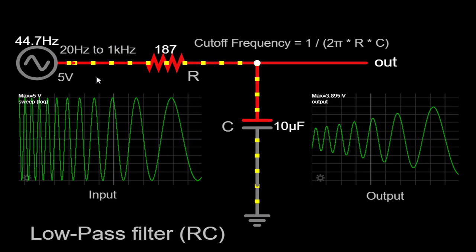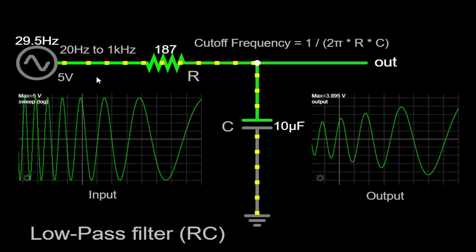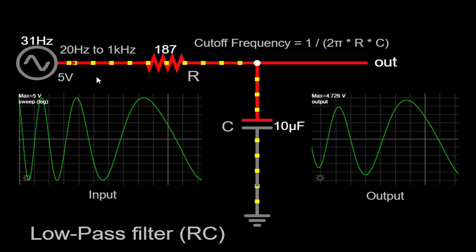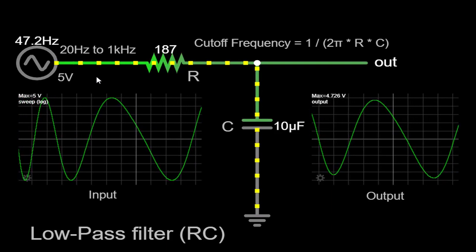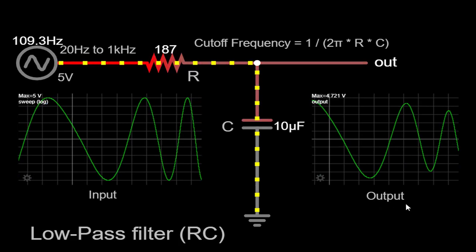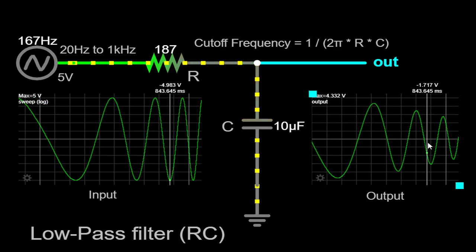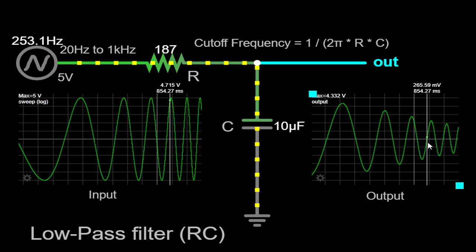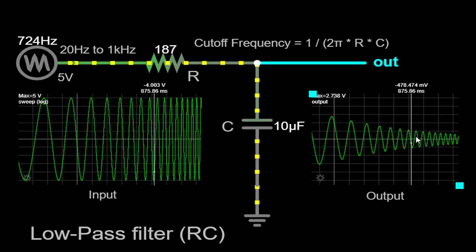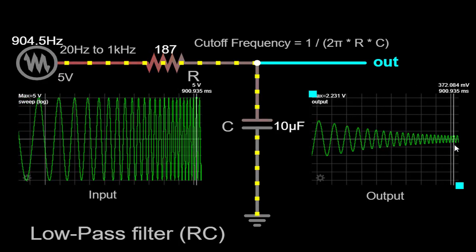However, as we move higher up the frequency range, towards the 1 kHz mark, you will observe a distinct change in the output waveform. The amplitude of the output signal starts to decrease gradually, indicating that the higher frequencies are being attenuated or filtered out by the RC circuit. This attenuation occurs due to the interaction between the resistor and capacitor in the circuit, as we'll explain in more detail.